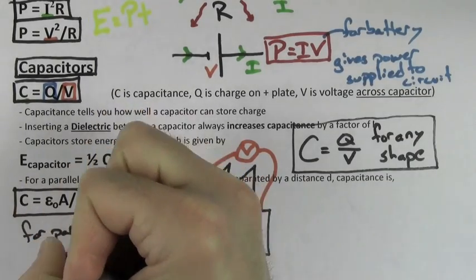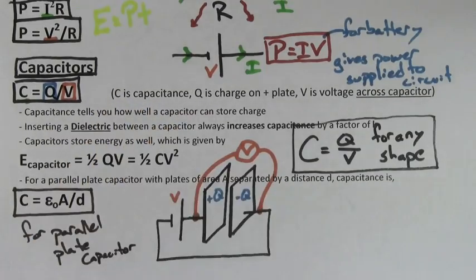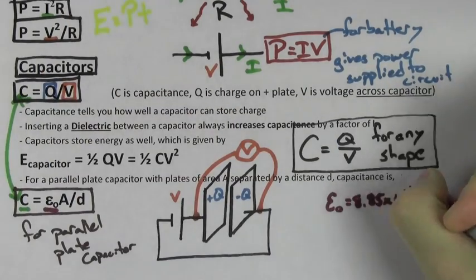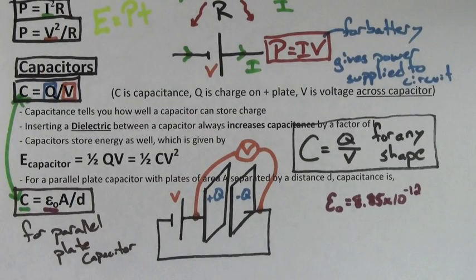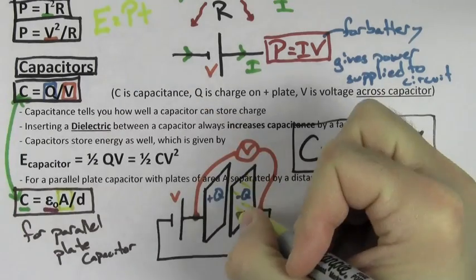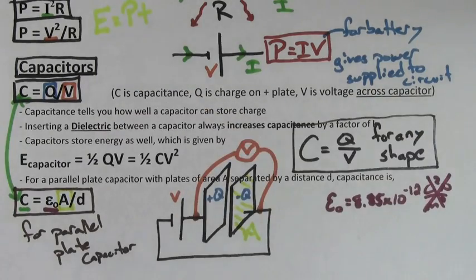If you happen to have a parallel plate capacitor, you can find the capacitance using epsilon naught times A over D. Epsilon naught is a constant with a value of 8.85 times 10 to the negative 12th. A is the surface area of one of the plates and D is the distance the plates are separated by.